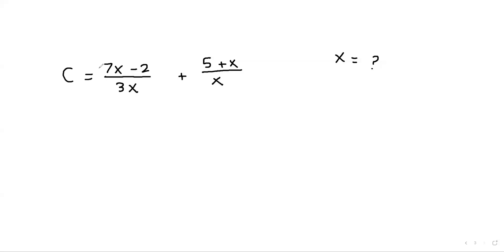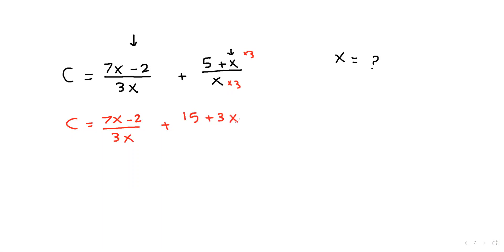We have c equals (7x minus 2) over (3x plus 5), plus x over x. We want to make x the subject. There are two fractions, so we find a common denominator. Multiply the first fraction's numerator and denominator by 3, giving (7x minus 2) over 3x, and the second term becomes 3x over 3x.